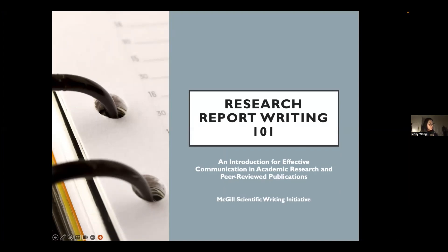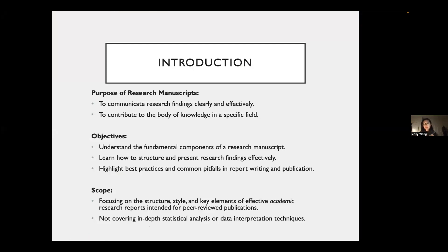This is a pretty high-level overview. I'm aware that most of you might not be from the health sector — some of you might be from general sciences or lab-based work. But for the most part, these different kinds of research reports look pretty similar. I'd recommend that after this, if you're looking to write something specific to your area of study, look at the published manuscripts in your area to make sure you're following what's accepted. The purpose of a research manuscript is to communicate your research findings and contribute to a body of knowledge within your specific field. Within this presentation, we're going to understand the fundamental components of a research manuscript, learn how to structure and present findings effectively, and highlight common pitfalls. I'm going to focus on the structure, style, and key elements of effective academic research reports intended for peer-reviewed publications.